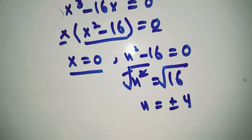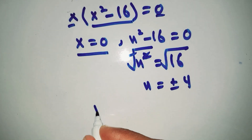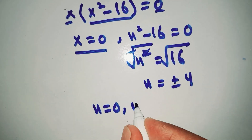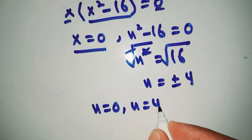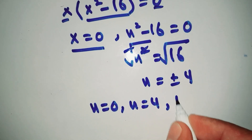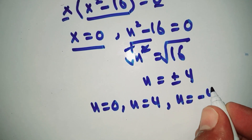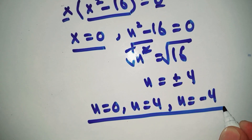So the three values of x are: x is equal to 0, x is equal to positive 4, and x is equal to negative 4. This is our answer.